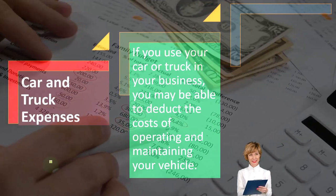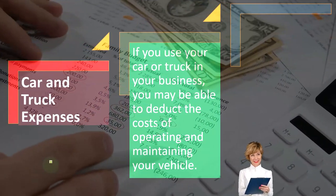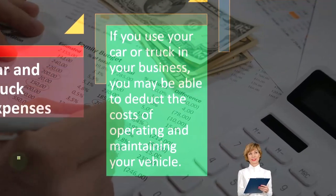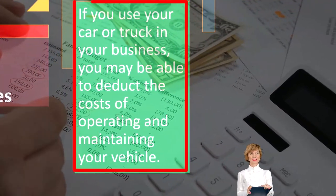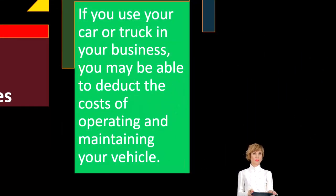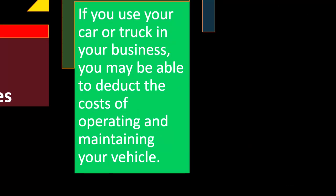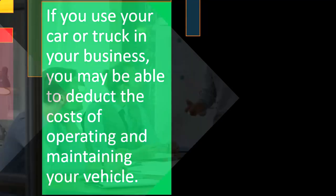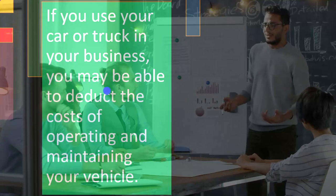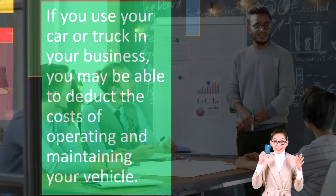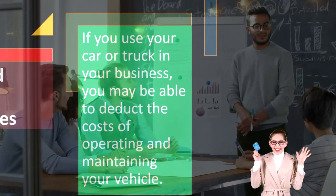We're focused on car and truck expenses, which is often another area of difficulty for multiple reasons. One reason is that you might have cars and trucks used for both personal and business purposes. We need to break out business from personal use, as we've seen in prior presentations. To deduct on Schedule C, the expense needs to be ordinary and necessary for business. We also have different methods available for tracking the use of an automobile.